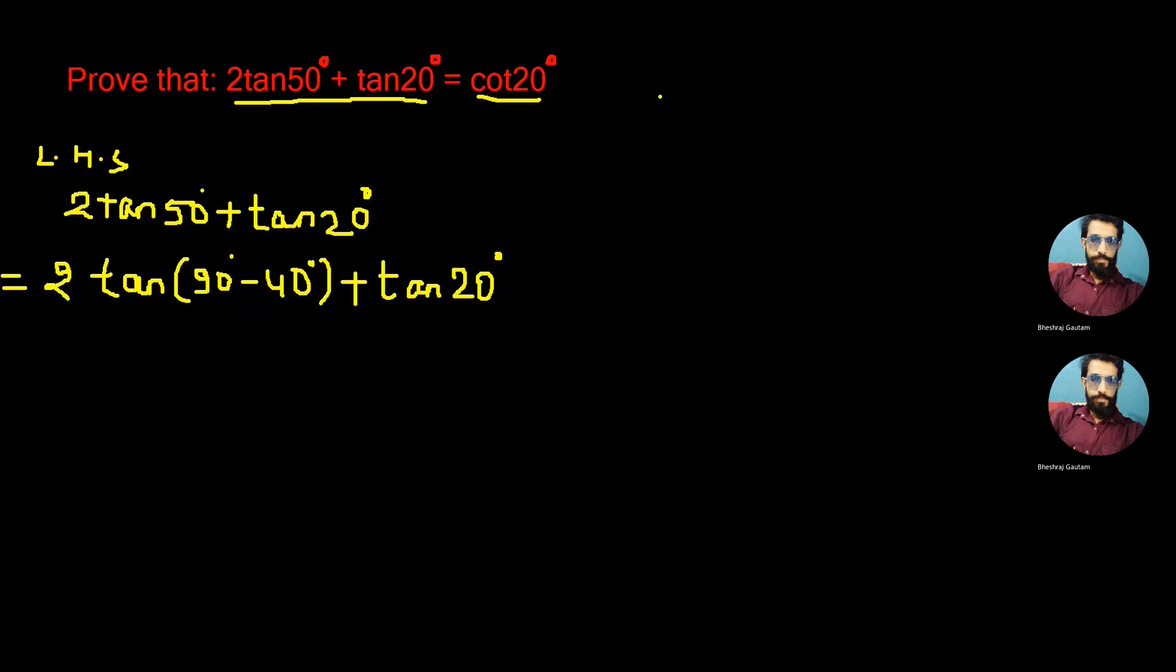As we know, tan(90° - θ) has the same value as cotθ. The above step can be written as 2 times tan(90° - 40°) as cot40°, comparing with this formula, plus tan20° as same.